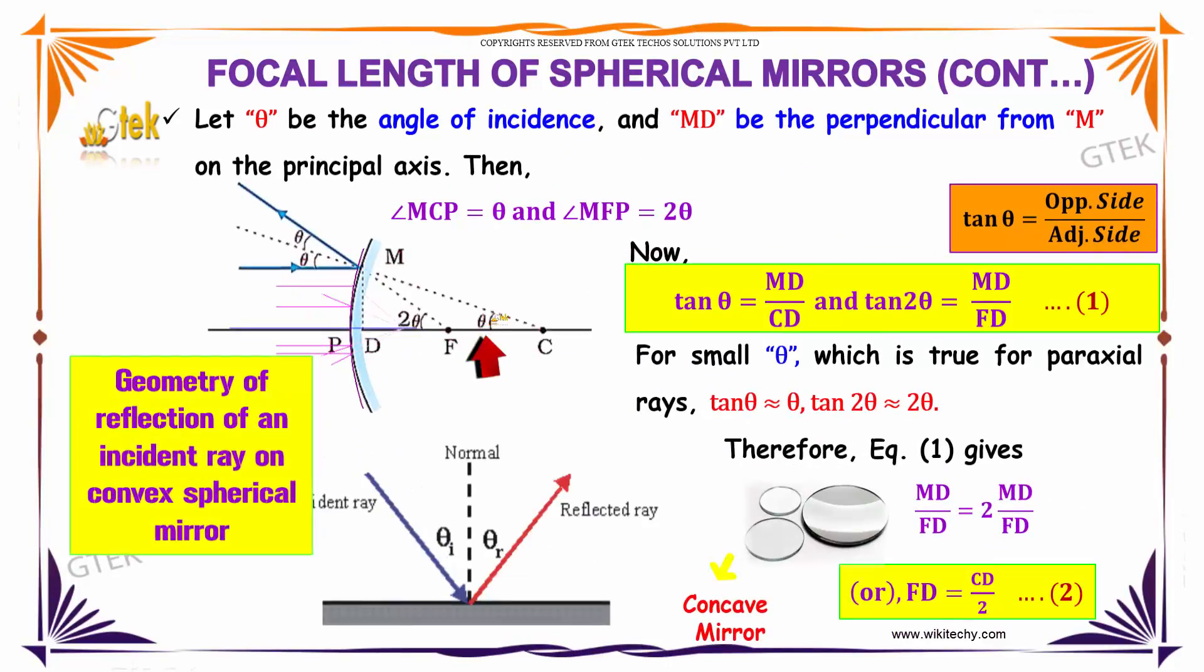Let theta be the angle of incidence and MD be the perpendicular from M on the principal axis.